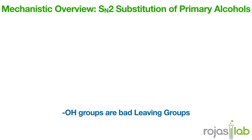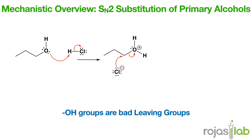Next, let's talk about the SN2 reaction of primary alcohols. Conversion of primary alcohols to alkyl halides via a concerted SN2 process occurs after activation of the OH group. The hydroxyl group is activated — like being protonated or converted to a better leaving group — and then the nucleophile attacks from the backside as the leaving group departs.